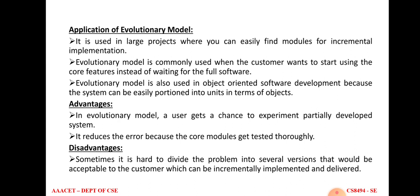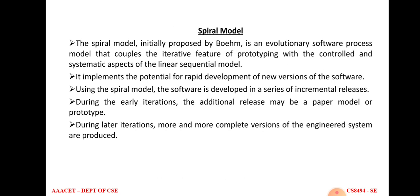There are some disadvantages. It is very hard to divide the problem into a number of versions — meaning it is very hard to divide the whole program into smaller chunks. There are two models in the evolutionary process model: one is the spiral model and the second is the prototyping model.